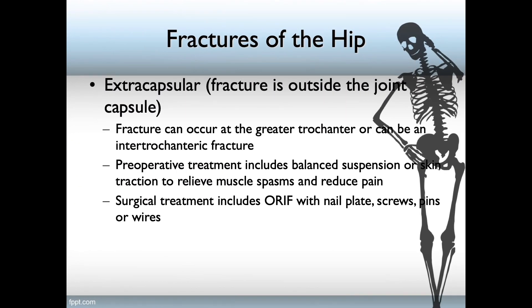The second type is extracapsular — fractures outside of the joint capsule. This fracture can occur at the greater trochanter and can be an intertrochanteric fracture. Post-operative treatment includes balanced suspension and/or traction to relieve muscle spasms and reduce pain. Surgical treatment includes ORIF with nail plate, screws, pins, or wires — essentially metallic reconstruction of the affected bone.